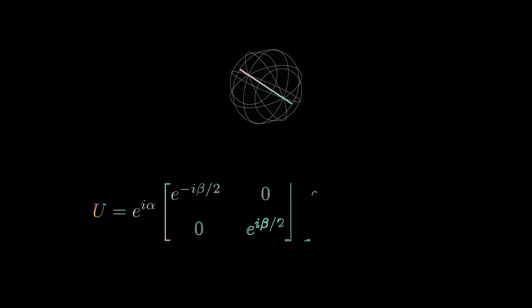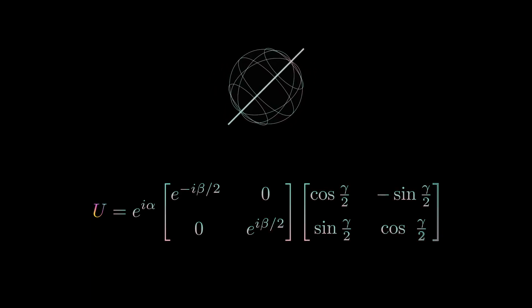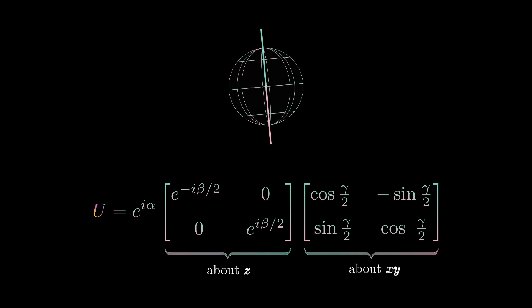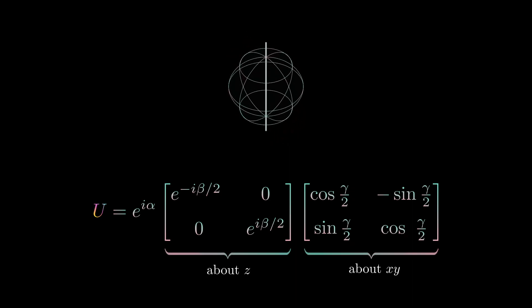There are an infinite number of 2x2 unitary matrices, and thus an infinite number of single qubit gates. However, it turns out that every unitary matrix can be defined as the product of the following 2x2 matrices. The rightmost matrix is just the standard rotation matrix. We will see soon that the left matrix can be understood as just a rotation about the Z axis. This means that every unitary matrix can actually just be represented as a rotation about the Bloch sphere.